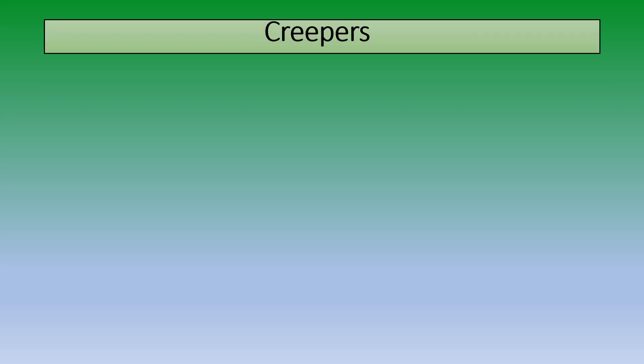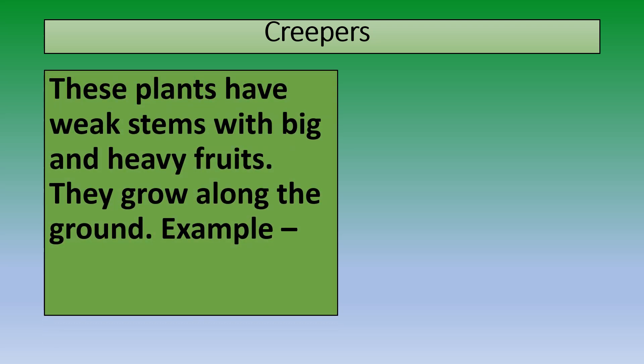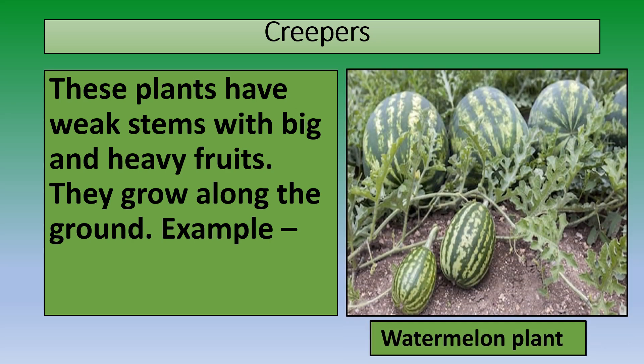Now let's learn about creepers, which are also part of the small plant family. These plants have weak stems with big and heavy fruits and they grow along the ground. For example, the watermelon plant. If you look at this picture carefully, you will notice that the watermelons are growing along the ground — and do you know why? It is because the fruits are very big and heavy and the stems are too weak to carry their weight, so the creeper grows along the ground and rests its fruit on it.